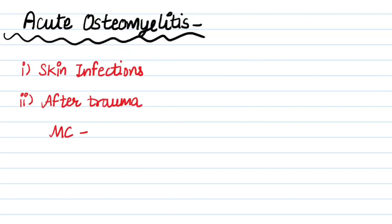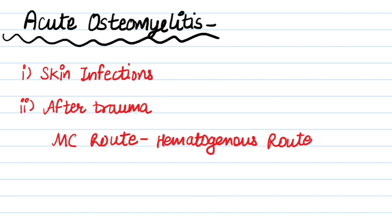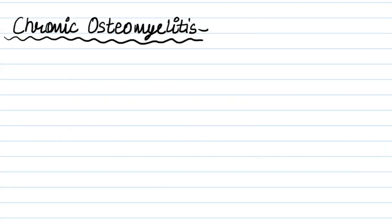Acute osteomyelitis mainly happens after skin infections and boils. It gets hematogenous access, and the second cause is after trauma by direct contamination of bone. The most common route is the hematogenous route by blood. It progresses rapidly with abrupt onset, and the most common causative organism is Staphylococcus aureus — which is the most common cause of any disease in orthopedics.